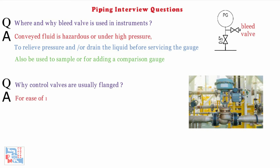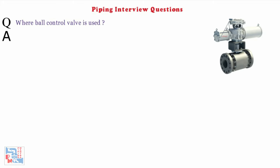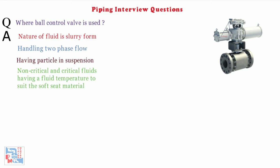Next: why are control valves usually flanged? Control valves are usually flanged for the ease of installation and removal during maintenance. Next: where are ball control valves used? Ball control valves are suitable where the nature of fluid is slurry form, or handling two-phase flow having particles in suspension.